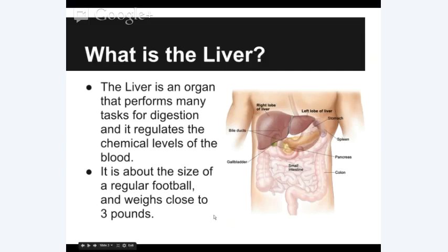The liver is an organ that performs many tasks for digestion and regulates the chemical levels of the blood. We see the different lobes of the liver, the bile duct, the gallbladder, the stomach, and the pancreas. All of this aids in digestion and is located to help the small intestine. One of the most amazing facts about the liver is that it's about the size of a regular football and can weigh up to three pounds — roughly three-fifths of a five-pound bag of sugar. It is a very large organ in our body.